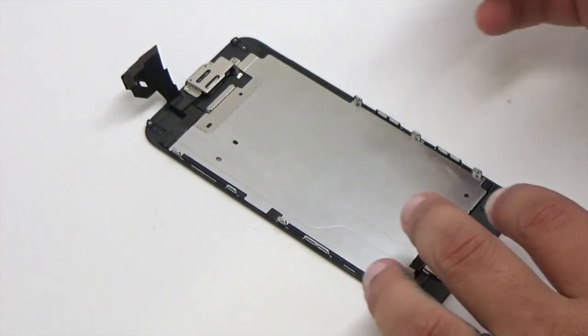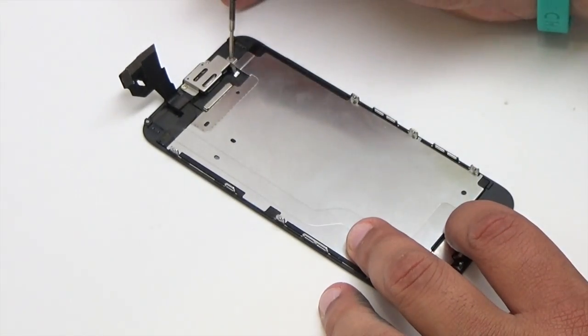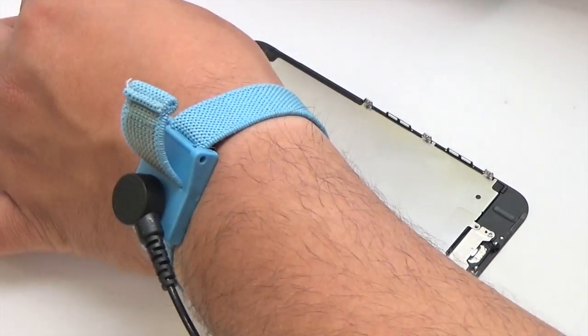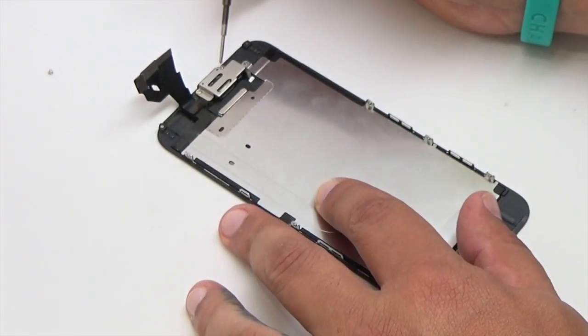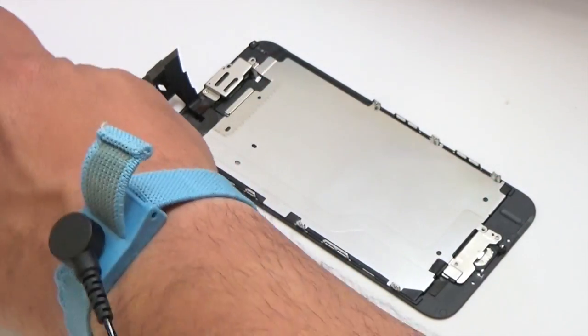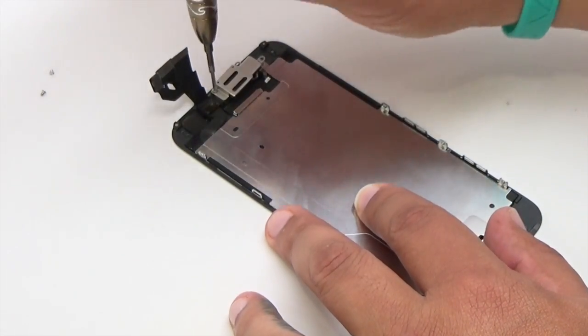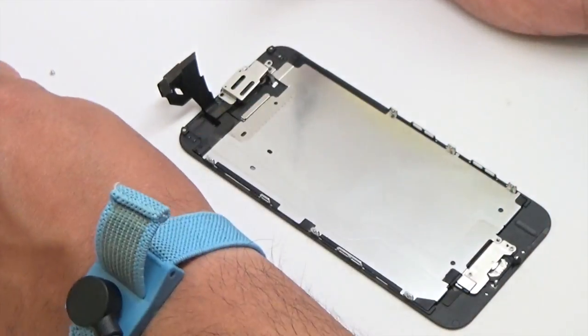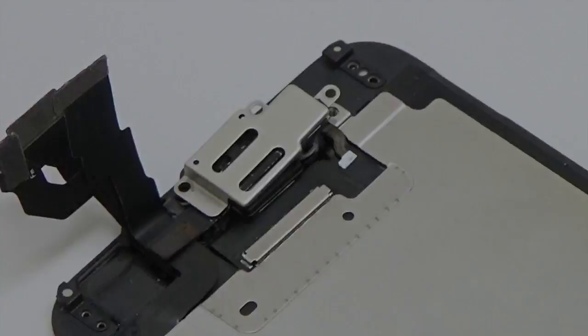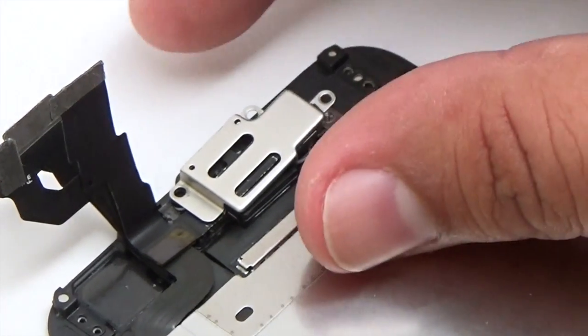Remove the three screws securing the front-facing camera bracket. Lift and remove the front-facing camera bracket from the display assembly.